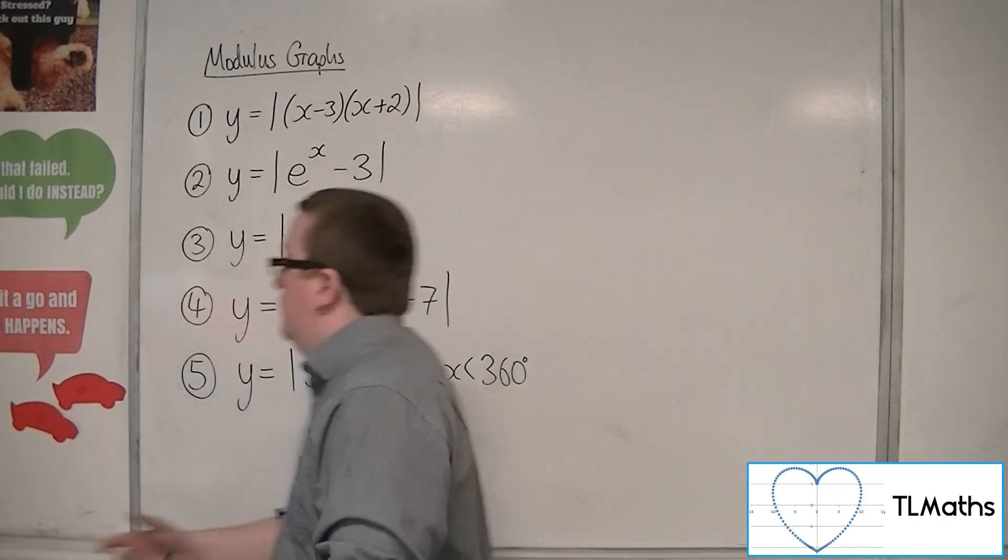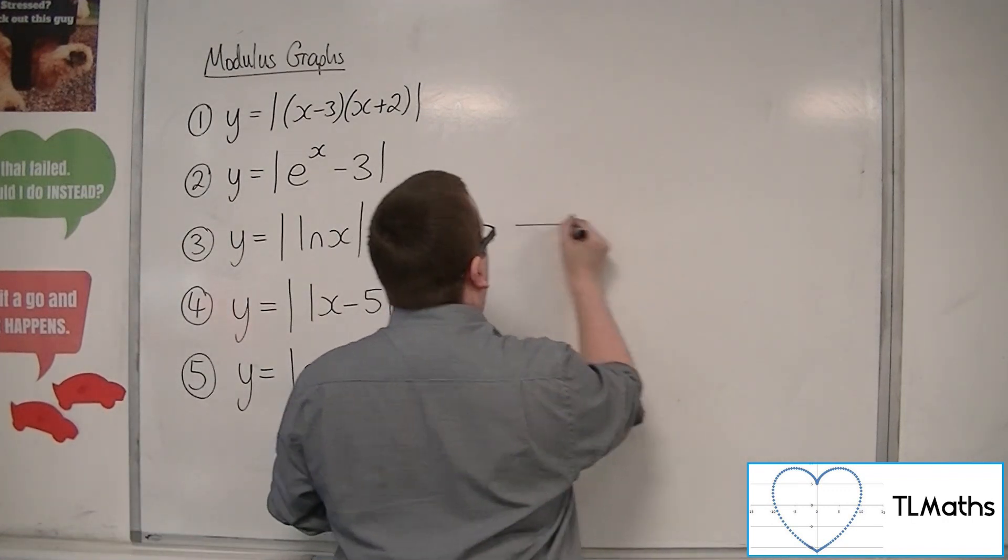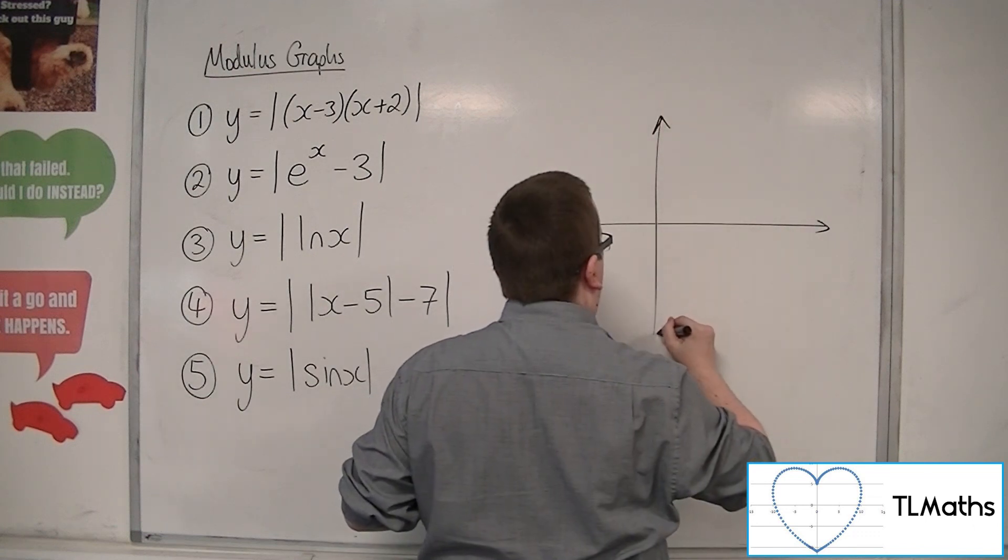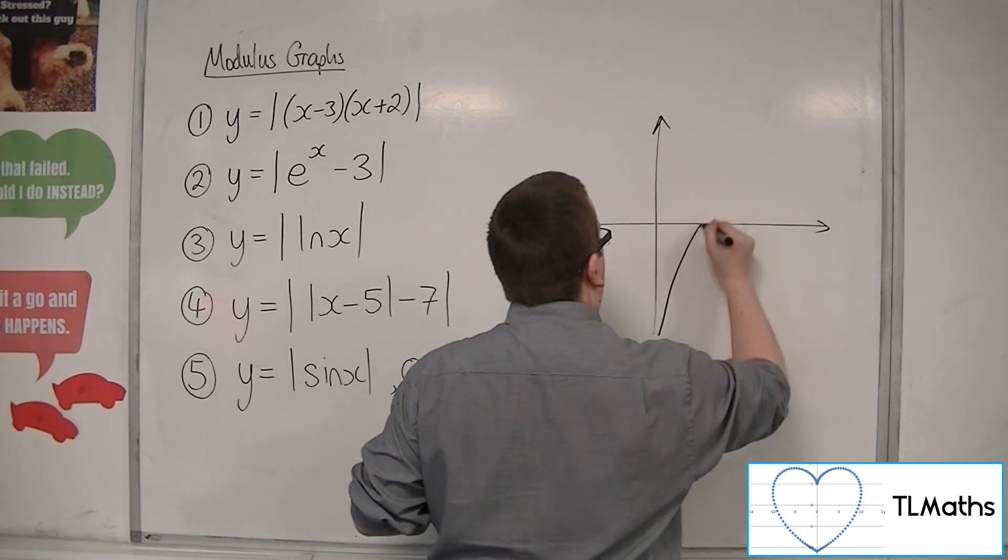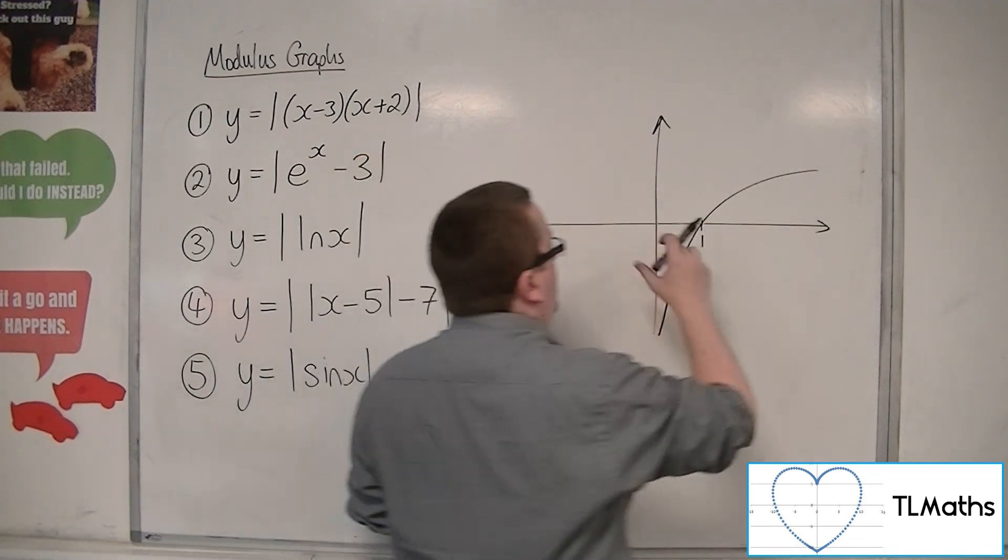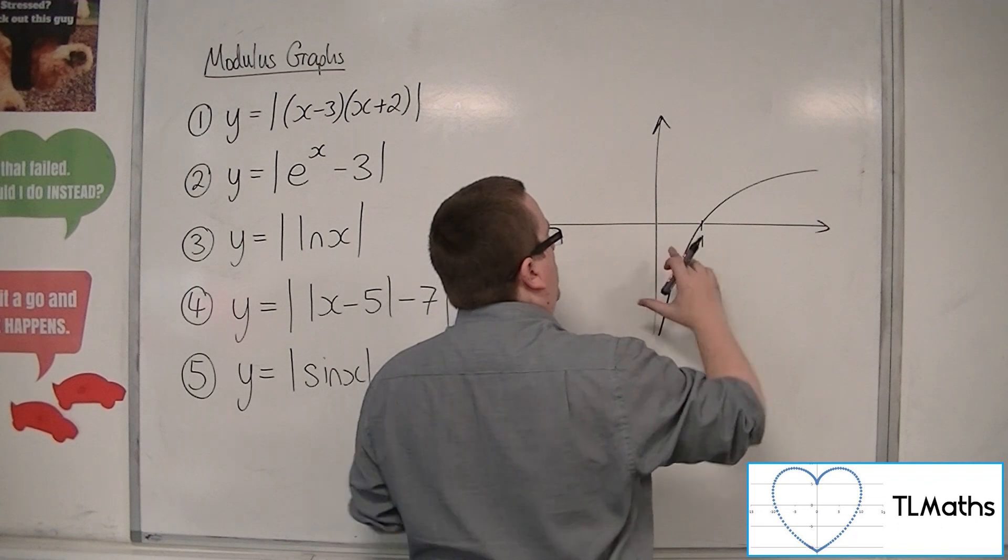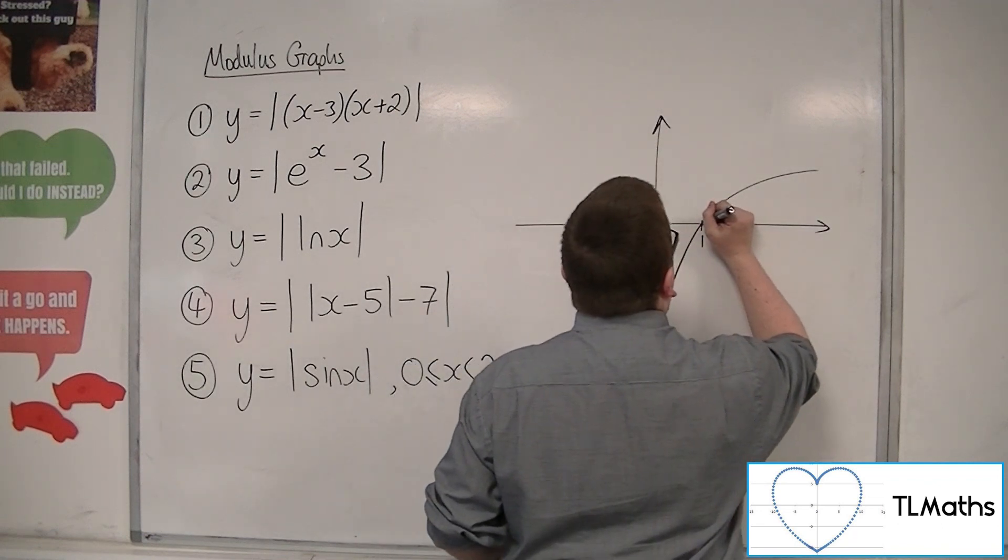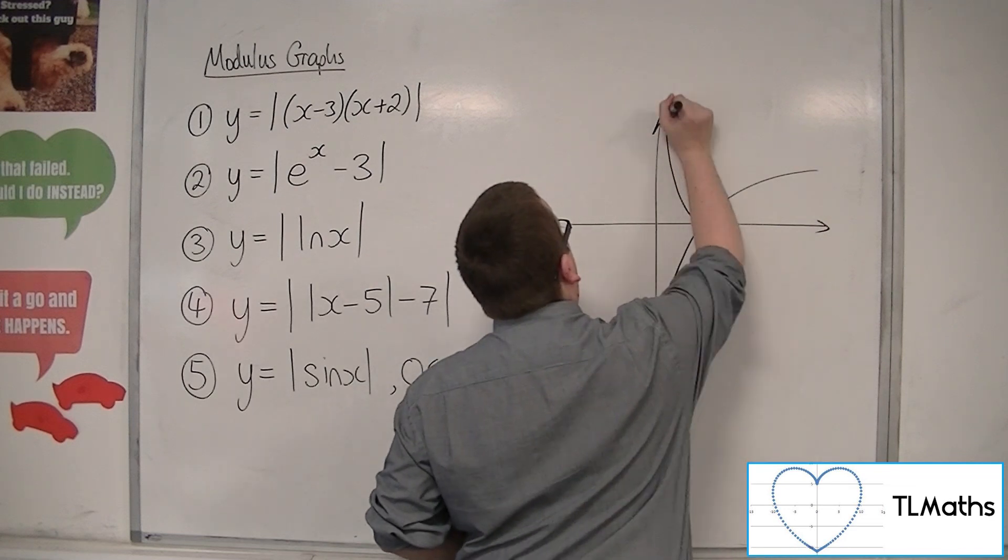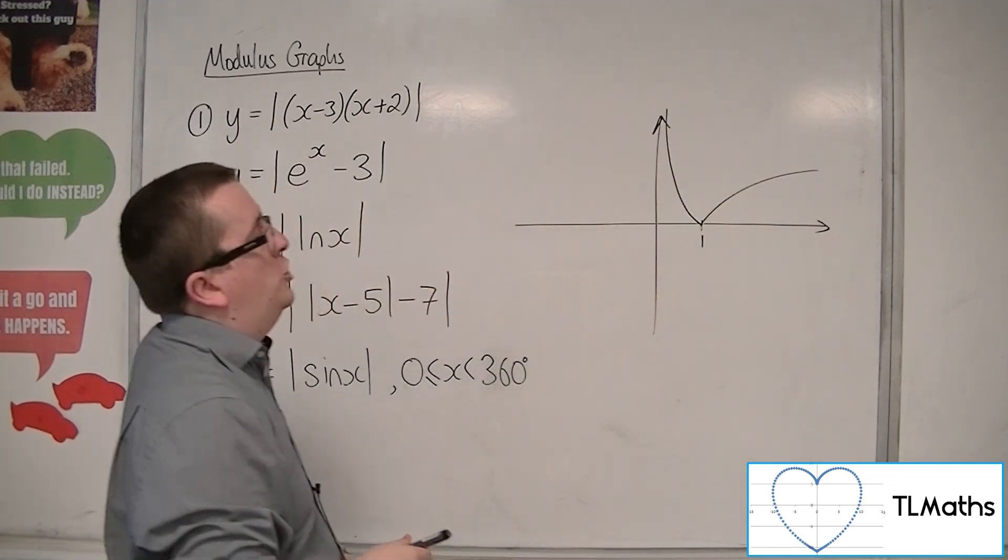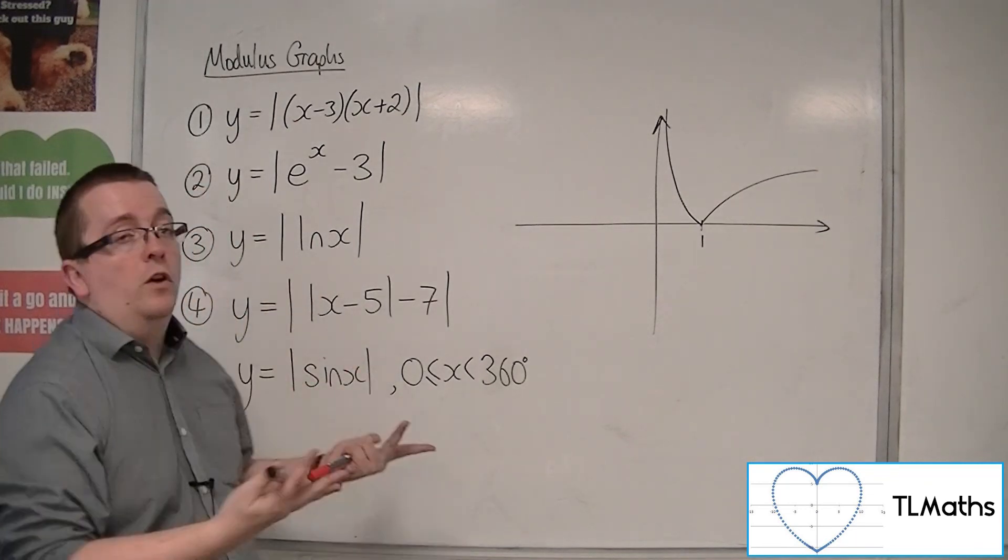y equals the mod of log x. So y equals log x just looks like this. So that's at 1. So this part of the graph, which has a vertical asymptote at x is 0, gets reflected up. And that would be the shape of my mod of log x.